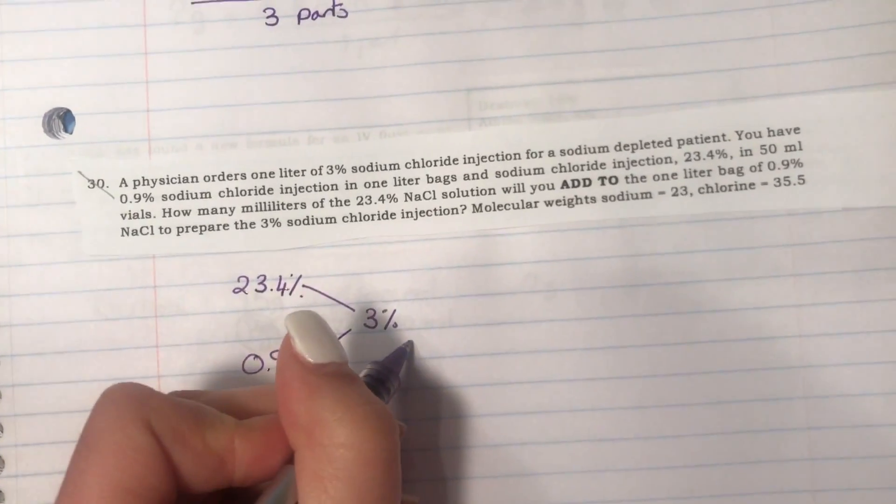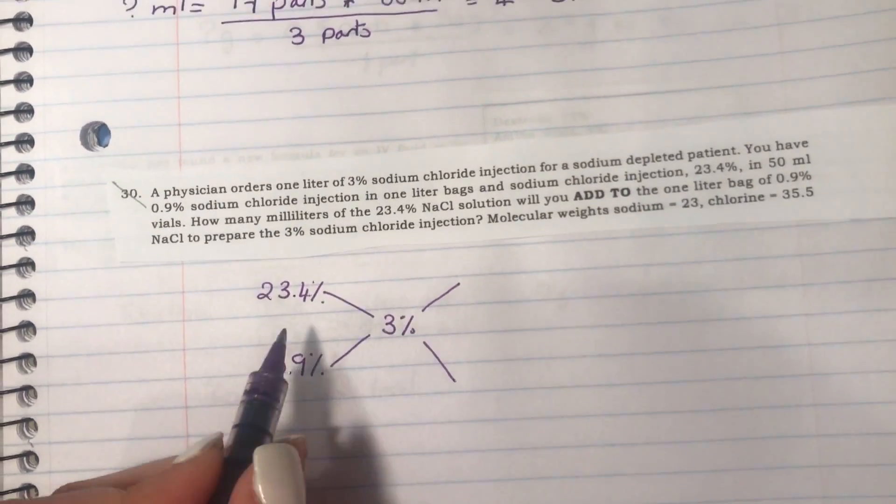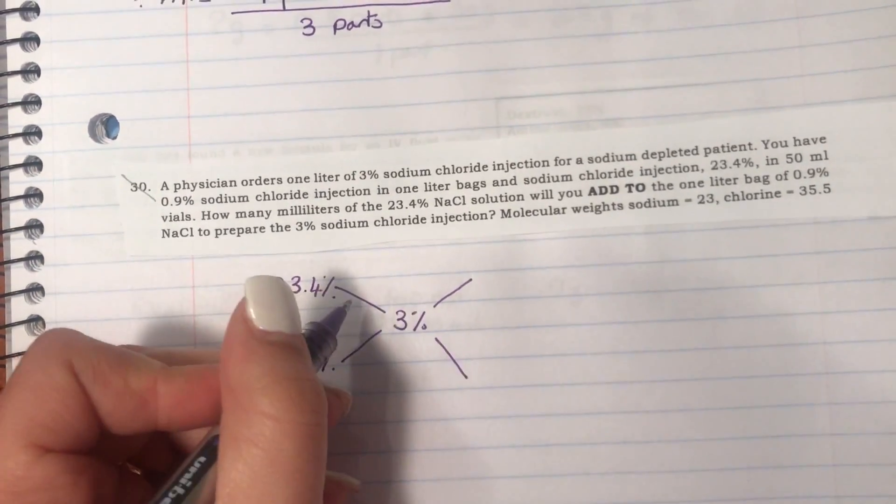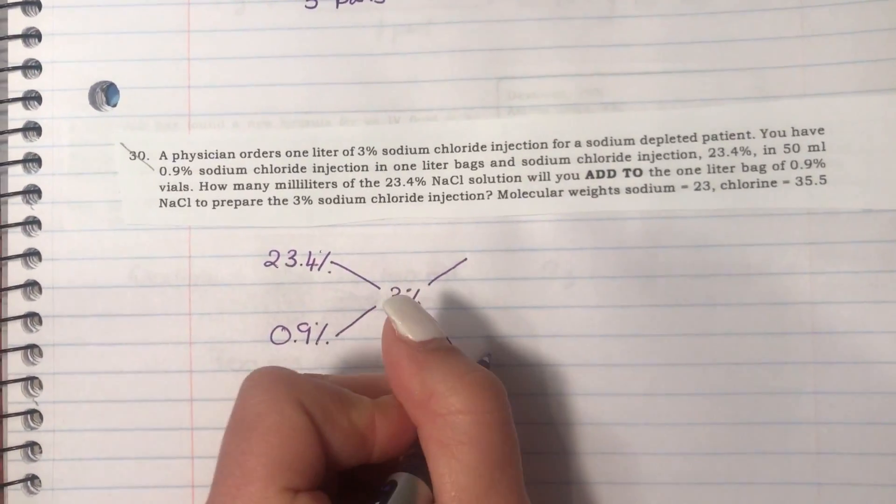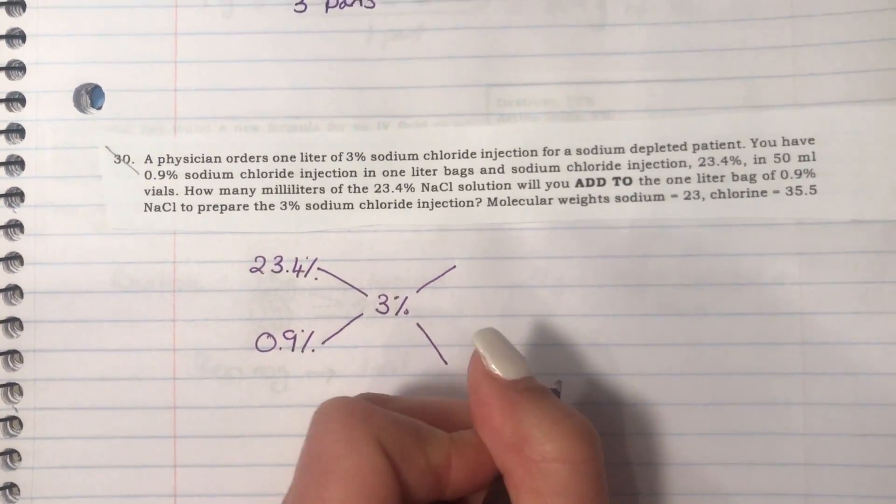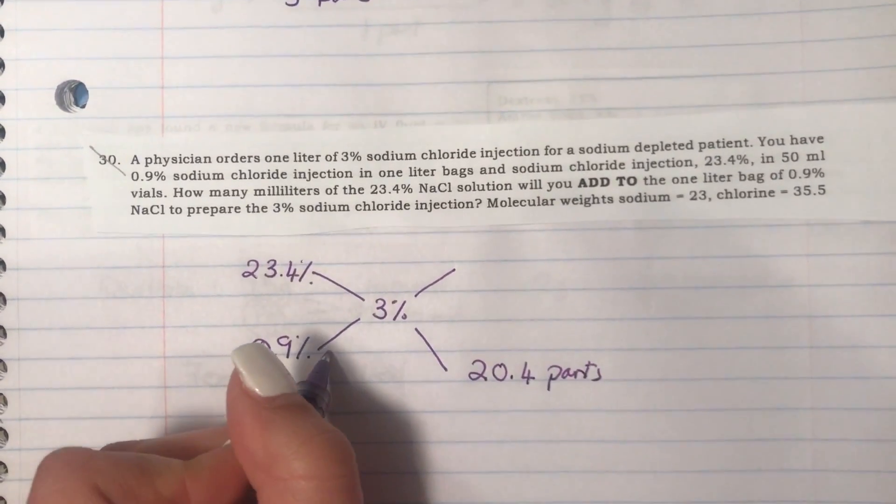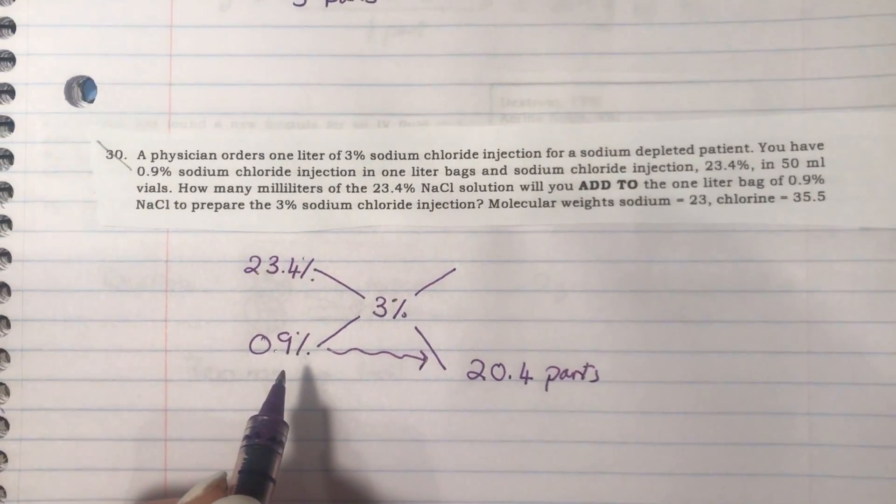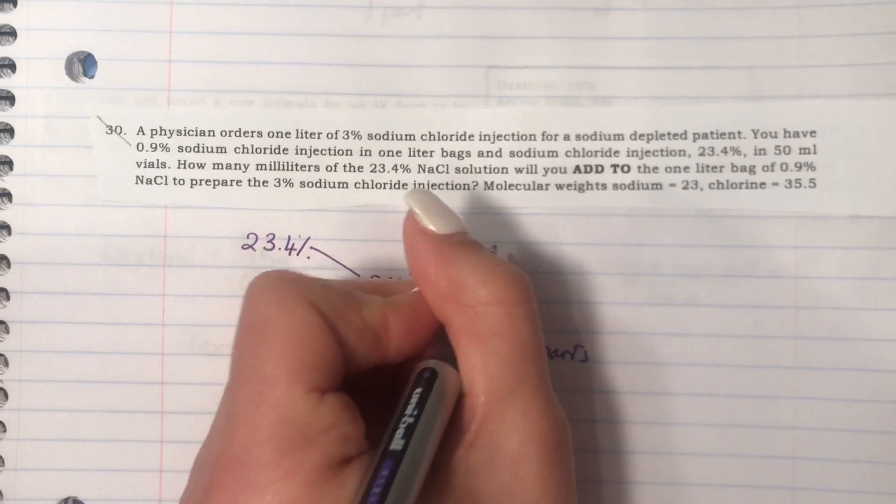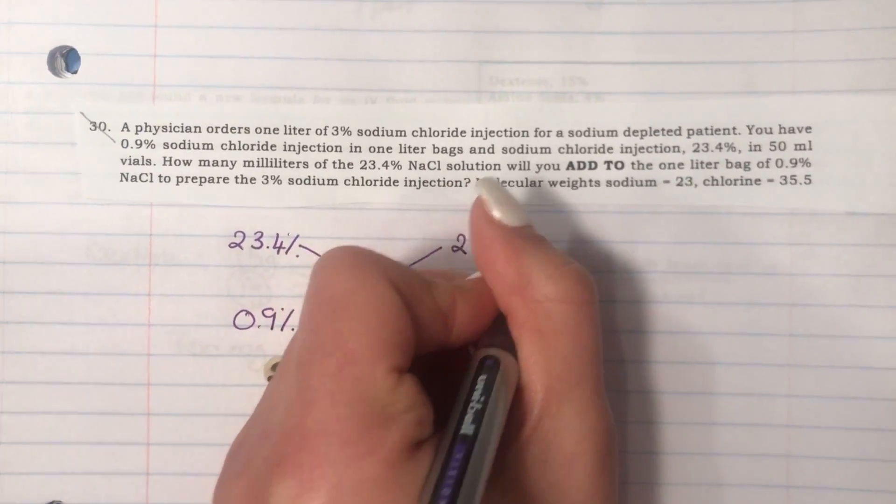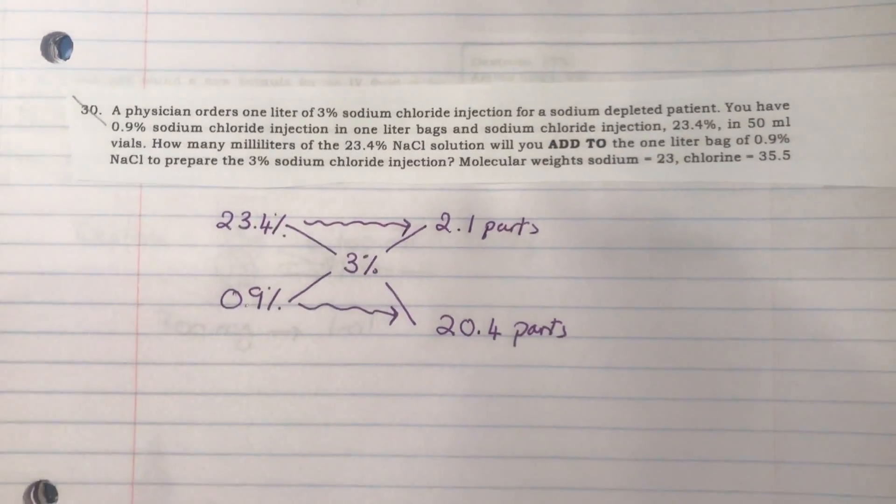After you've set that up, you will do the math. You need to subtract diagonally. So 23.4 minus 3% will be 20.4, and that's the parts of the 0.9% normal saline. Then 3 minus 0.9 will be 2.1 parts, and that's of the 23.4% sodium chloride.